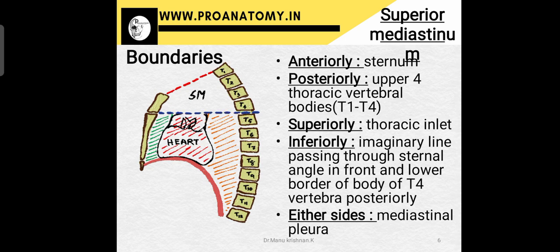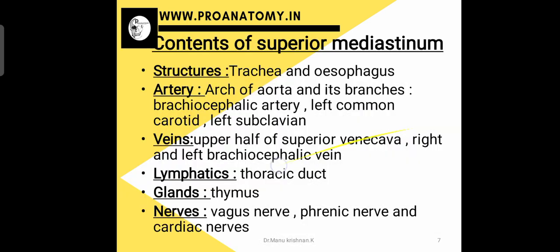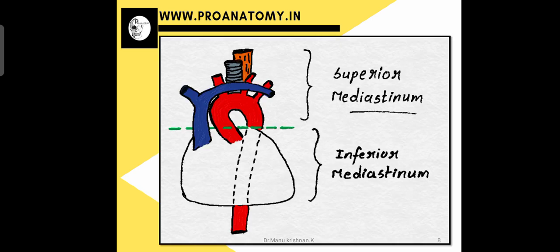The either sides of the mediastinum are always covered by mediastinal pleura. The contents of the superior mediastinum include the trachea and the esophagus. The arteries present are the arch of aorta and its branches: the brachiocephalic trunk, the left common carotid and the left subclavian arteries. The veins include the upper half of the superior vena cava and the right and left brachiocephalic veins. The lymphatics include the thoracic duct, the gland is the thymus, and the nerves include the vagus nerve, phrenic nerve and the cardiac nerves.